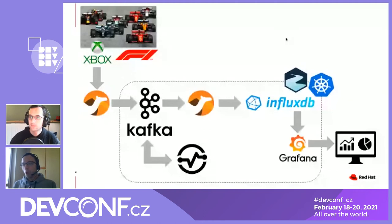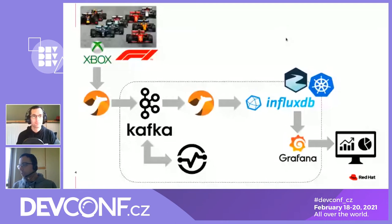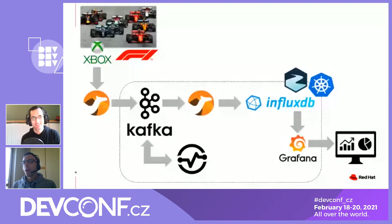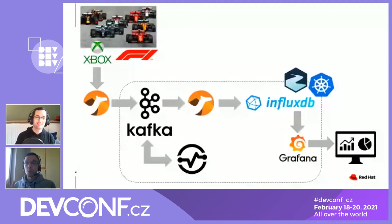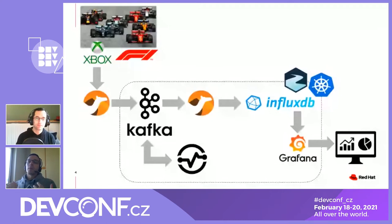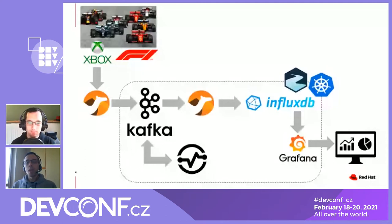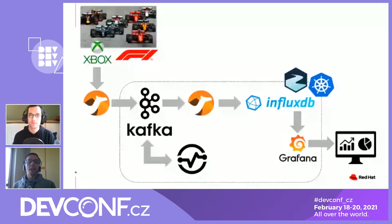The demo starts from Formula One telemetry data. We don't have a real Formula One car — it's quite impossible to find real Formula One data on the internet. Thanks to my eight-year-old son playing Xbox, I discovered that the Formula One 2020 game from Codemasters provides telemetry data in real time over UDP. We wrote a library to decode the Formula One UDP packets into Java POJOs that we can handle easily.